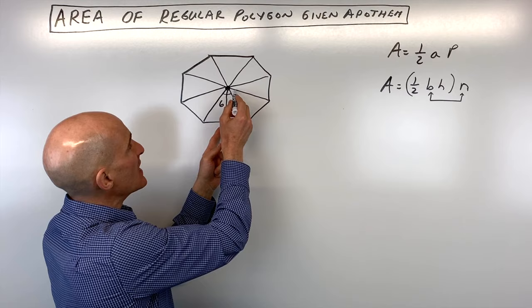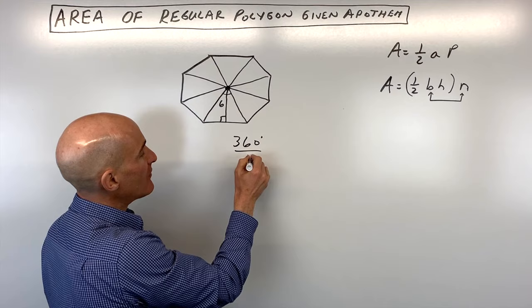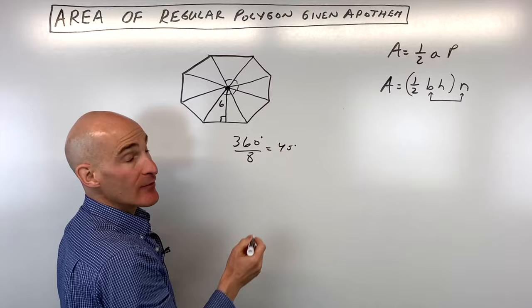So what we're going to do is look at this triangle right here. And the first thing we're going to do is see how we divide it up into eight triangles because there's an octagon. So if we take 360 degrees divided by eight, each one of these central angles here is going to be 45 degrees.